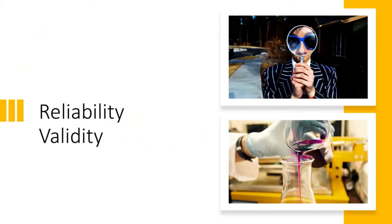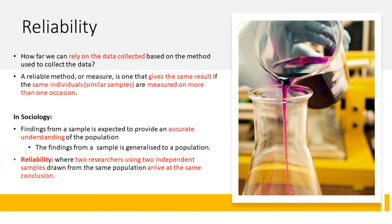We will now look at two other concepts: reliability and validity, which we have referred to very often in previous lessons. All scientists are concerned with the extent to which they can rely on their methods of data collection — in other words, they are concerned with reliability. A reliable method or measure is one that gives the same result if the same individuals or similar samples are measured on more than one occasion. In sociology, sociologists study a sample and it is expected to provide an accurate understanding of the population to which the research findings will be generalized.